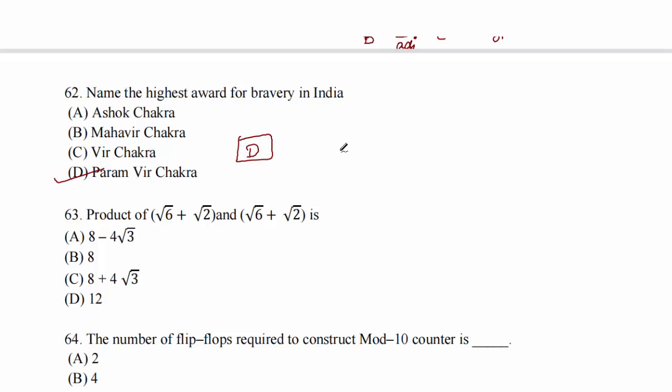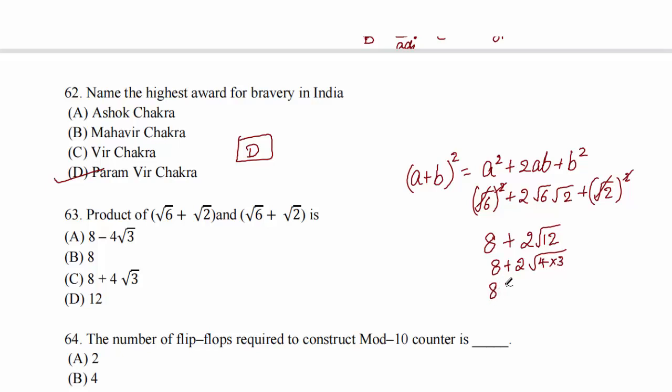Question 63: the product of (a + b) into (a + b), which is (√6 + √2) whole square, equals a² + 2ab + b². Substituting: (√6)² + 2(√6)(√2) + (√2)² equals 6 + 2√12 + 2. This simplifies to 8 + 4√3. Option C.